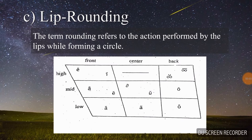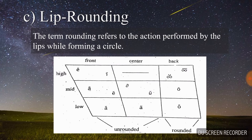The term rounding refers to the action performed by the lips while forming a circle. Unrounded vowel sounds are produced with the lips spread apart. Front vowels and center vowels are unrounded. It is helpful to remember that back vowels are rounded, because this keeps us aware of the need to exaggerate them — pronounce them very rounded, with the mouth making as nearly a perfect circle as possible. To make long U, pretend you are kissing somebody, and to make long O, pretend you are a fish.